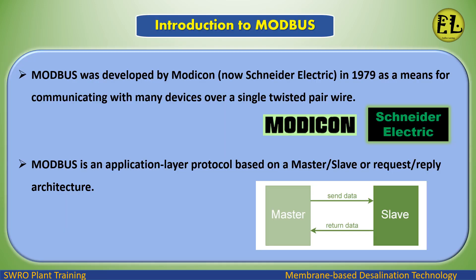Modbus was developed by Modicon, now Schneider Electric, in 1979 as a means for communicating with many devices over a single twisted pair wire. Modbus is an application layer protocol based on a master/slave or request/reply architecture.